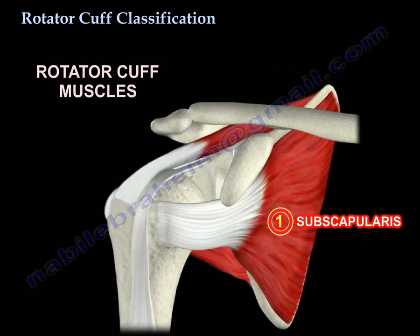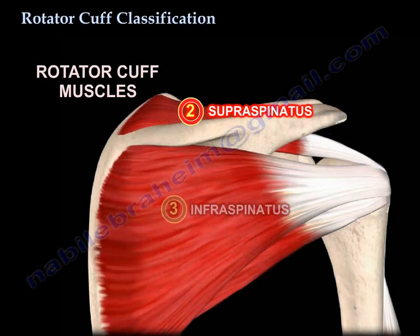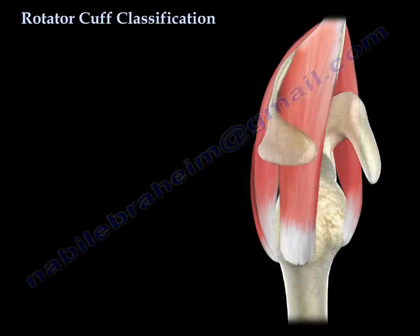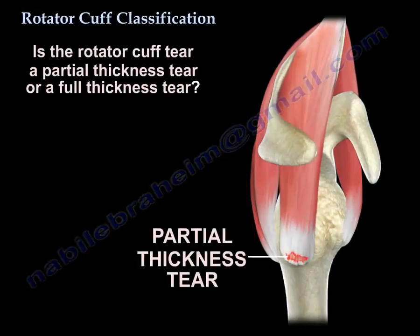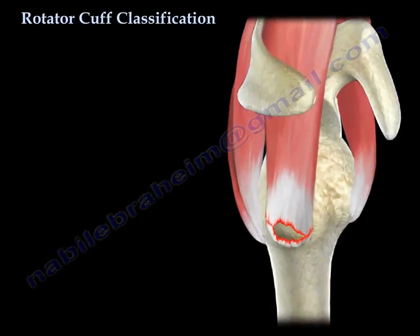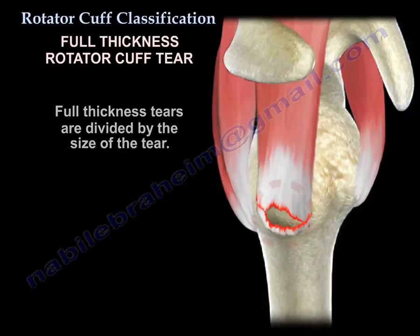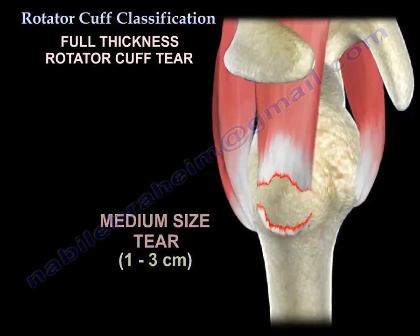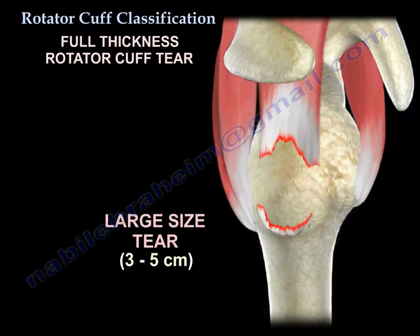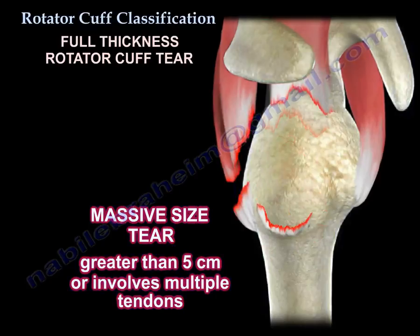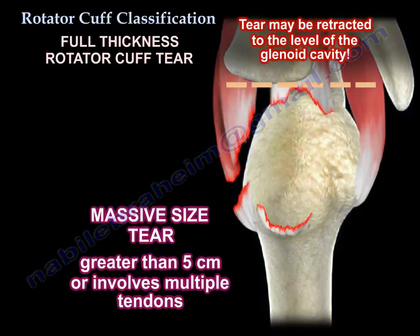Rotator cuff tear classification. First, is it a partial thickness tear or a full thickness tear? For full thickness tears, they are divided by size: small is up to 1 cm, medium is 1–3 cm, large is 3–5 cm, and massive cuff tear means more than 5 cm, involves multiple tendons, or tears with retraction to the glenoid.